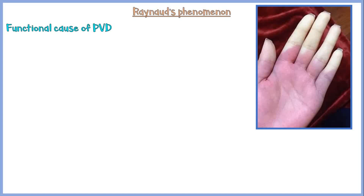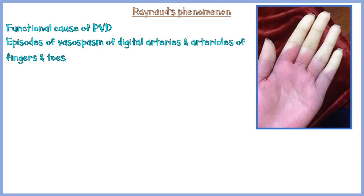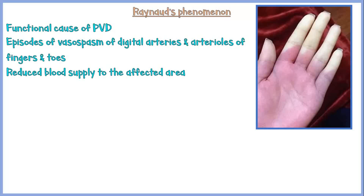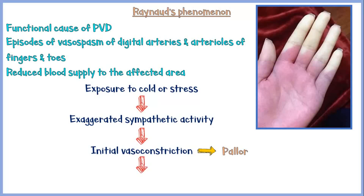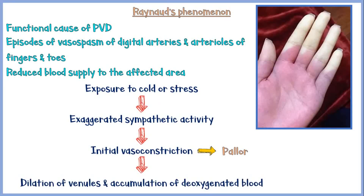Raynaud's phenomenon is a functional cause of peripheral vascular disease, characterized by episodes of vasospasm of the digital arteries and arterioles of fingers and toes. Vasospasms cause reduced blood flow to those areas. Raynaud's is triggered by exposure to intense cold or stressful situations, causing exaggeration of sympathetic activity and vasoconstriction, resulting in initial pallor. Persistent vasoconstriction causes dilation of venules and accumulation of deoxygenated blood, resulting in cyanosis.